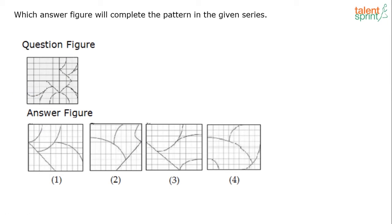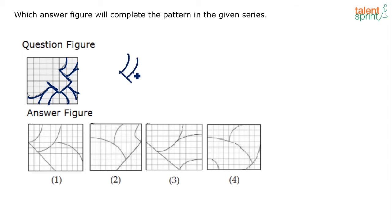The figures here are not very clear because it's a scanned image from one of the previous papers. But if you see, there is a straight line, then there are two curved lines like this, and then one extension. Similarly, then there is a straight line, two curved lines like this, and there is this extension. Then there is the straight line, two curved lines in this fashion, and then there is an extension.